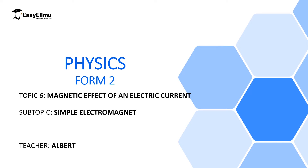Welcome to ECELEMU Learning Simplified and welcome to this lesson. In the previous lesson we discussed the magnetic field around a solenoid and we said a solenoid behaves like a magnet with a north pole at one end and a south pole at the other end.